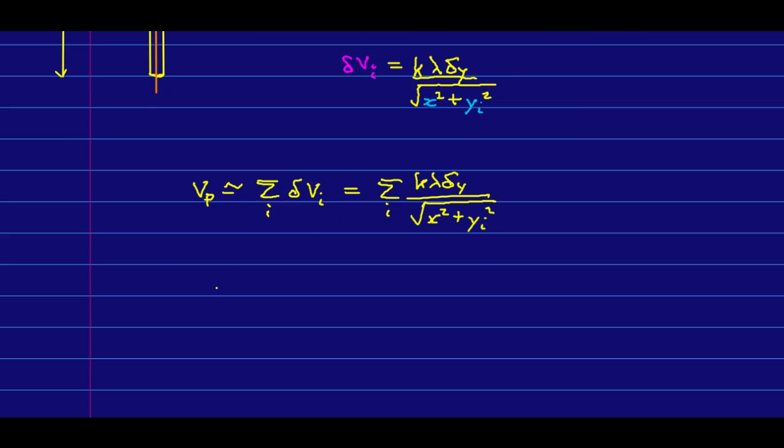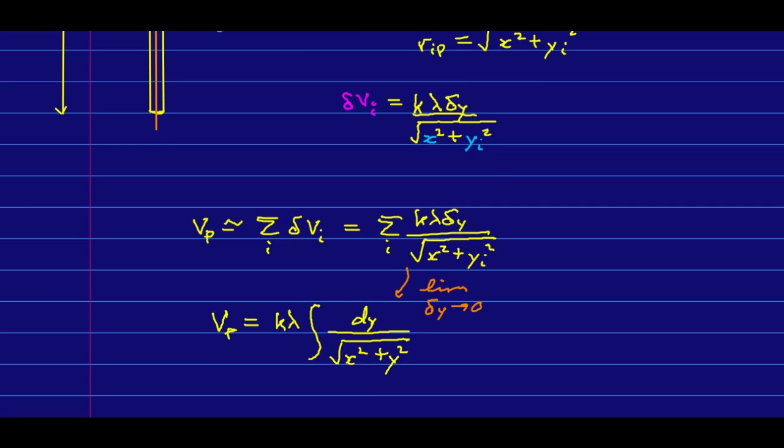But, I can now do the usual trick and convert that into an integral, which will make it precise. And I'll note that the k lambda are constants, which I'll pull out in front. And so, I have, where, as usual, the quantity with the delta on it has wound up as the thing that I am integrating with respect to, because what I have done here is take the limit as delta y goes to 0.